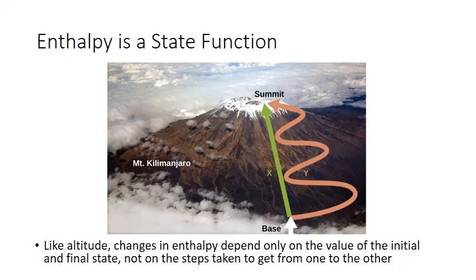An excellent example of a state function is altitude. If you're standing on top of Mount Kilimanjaro, you're at an altitude of 5,895 meters, whether you climbed straight up the side of the mountain like path X, or zigzagged up like path Y, or parachuted down from an airplane. The altitude depends only on the difference in elevation between the top of the mountain and sea level.